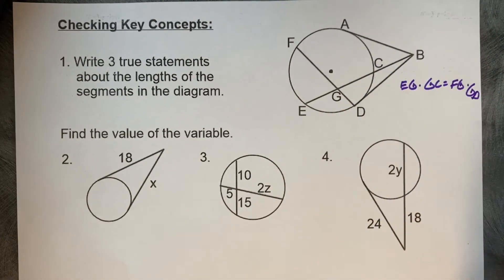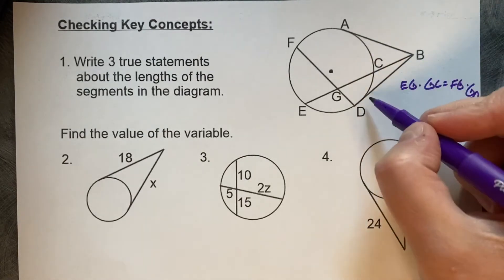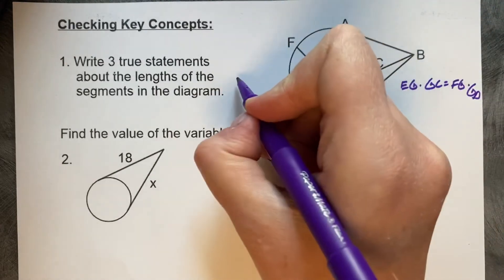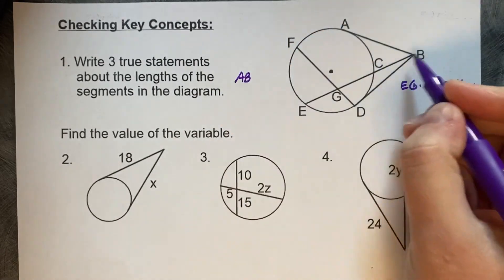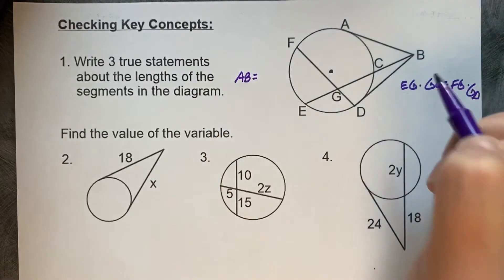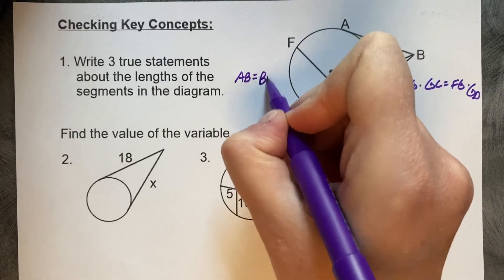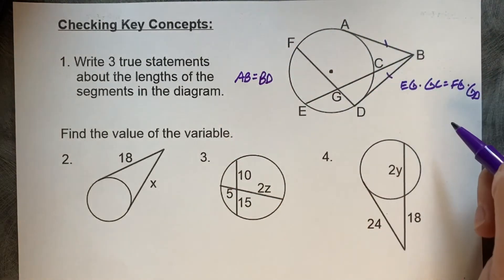Sorry, that's running off the page there. Okay, I can see two tangents. We can say that AB is equal to BD. Those are congruent.